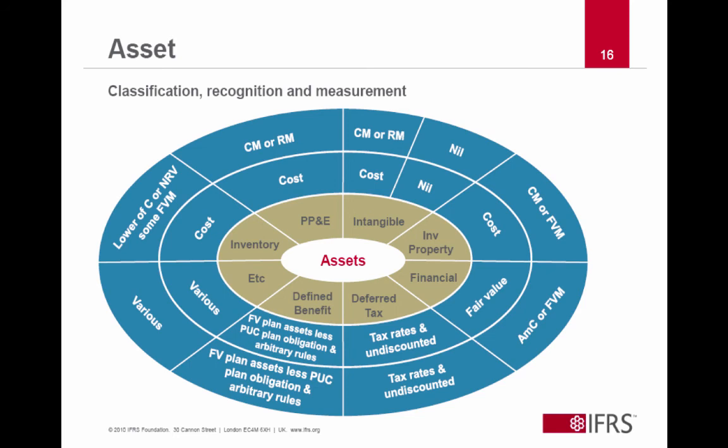Classification determines initial measurement, and then if you go to the outer circle you see subsequent measurement, which also depends on the classification. Sometimes it's cost, sometimes it's fair value, sometimes it's lower of cost or net realizable value, sometimes it's recoverable amount. Intangible assets that are internally generated we don't recognize at all, so there is no measurement attribute. We have to think about what we have in standards today, and hopefully someday we'll get a completed measurement chapter in the framework and have more consistency of measurement — or at least know conceptually why we are measuring different things in different ways.